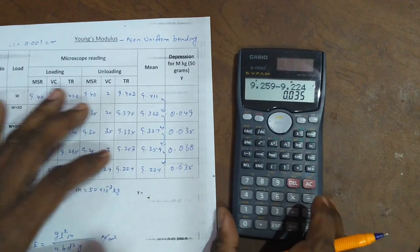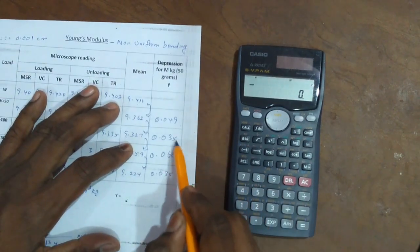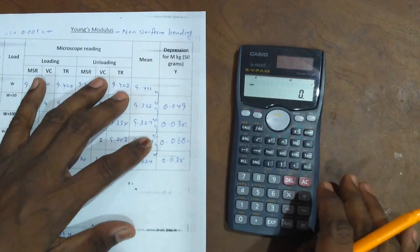So next, we got the mean values for depression, the mean equations for m kgs. So 1, 2, 3, 4 values divided by 4.